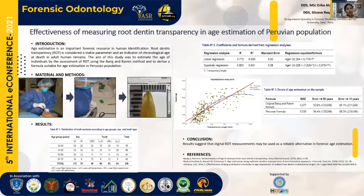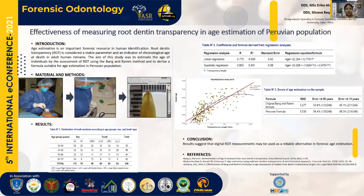To sum up, results suggest that digital root dentin transparency measurements may be used as a reliable alternative in forensic age estimation.